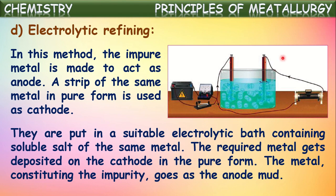The impure metal extracted from its ore, which contains impurities, is taken as anode. A pure metal of the same type is taken as cathode. An electrolyte of the same metal is taken as liquid to pass electricity through the solution. When electricity is passed, metallic ions from the impure anode migrate towards the cathode, where they are neutralized and deposited as pure metal. All remaining impurities remain at the anode as anode mud. In this way, pure metal is collected at the cathode.